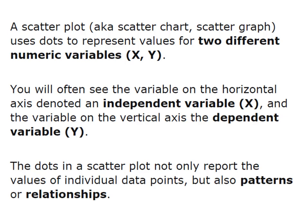The variable on the horizontal axis is denoted as an independent variable, variable X. The variable on the vertical axis is the dependent variable represented by Y. The dots in a scatter plot report not only the values of these pairs of data, but also patterns or relationships between the two numeric variables.